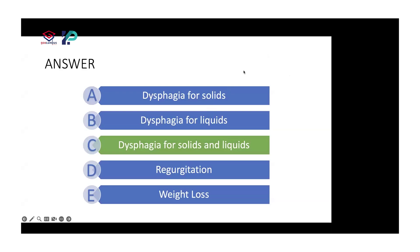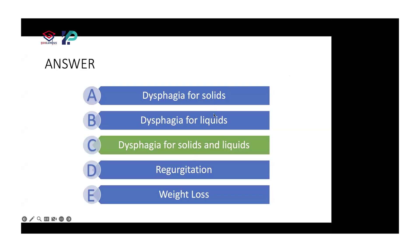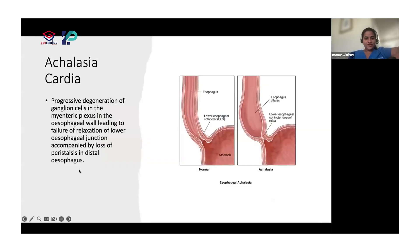Just for solids — esophageal cancer. And liquids — GERD? No worries, you've gotten it. I will cut to that. So what is achalasia? Basically, progressive degeneration of the ganglion cells in the myenteric plexus in the esophageal wall, which leads to failure of the relaxation of the lower esophageal junction, accompanied by loss of peristalsis in the distal esophagus. So it's not going to let it go in.